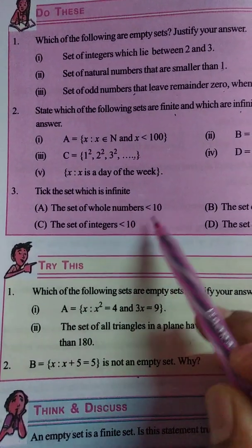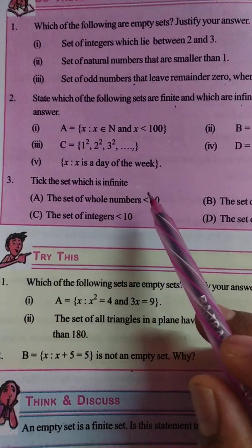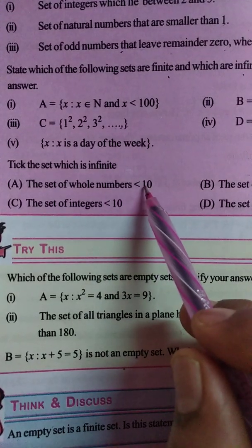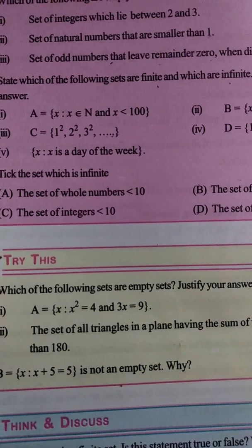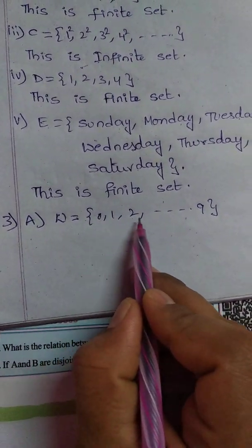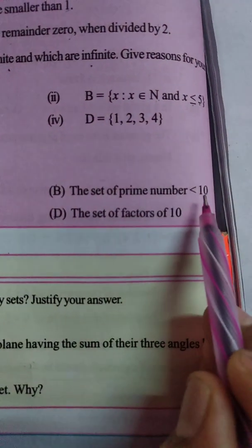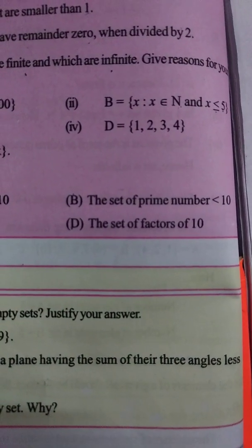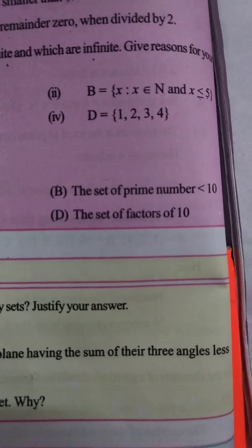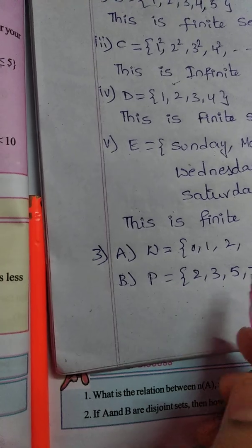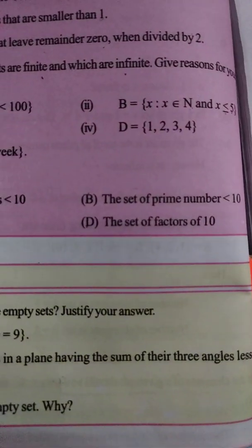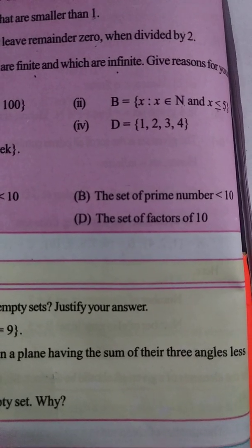Now the next question asks us to tick the set which is infinite. Option: the set of whole numbers less than 10, which is {0, 1, 2, 3, ...9}. We can count these, so this is a finite set. The set of prime numbers less than 10 is also a finite set, since we can list them.